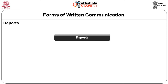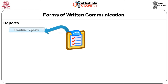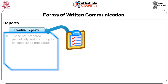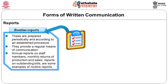The next form is reports, which may be classified in different forms: routine reports, commissioned reports, and reports necessitated by special events. Routine reports are prepared periodically according to an established procedure and provide a regular means of communication. Examples include annual reports, magazines on staff members, monthly returns of production and sales, and reports on outstanding bills.